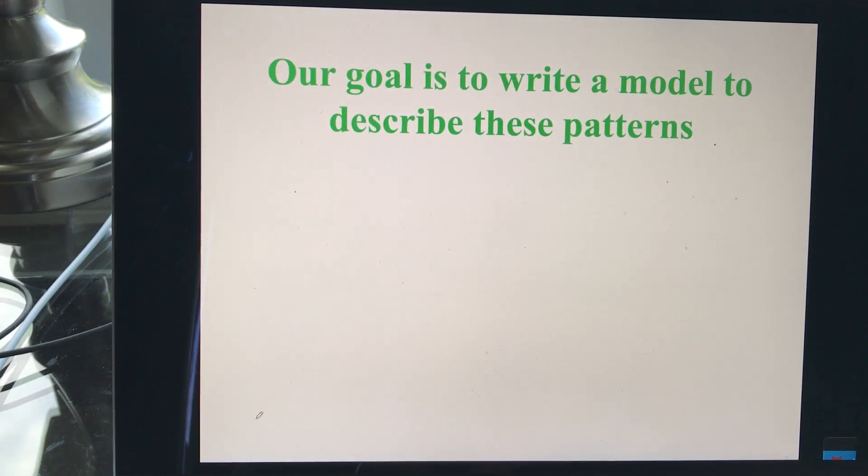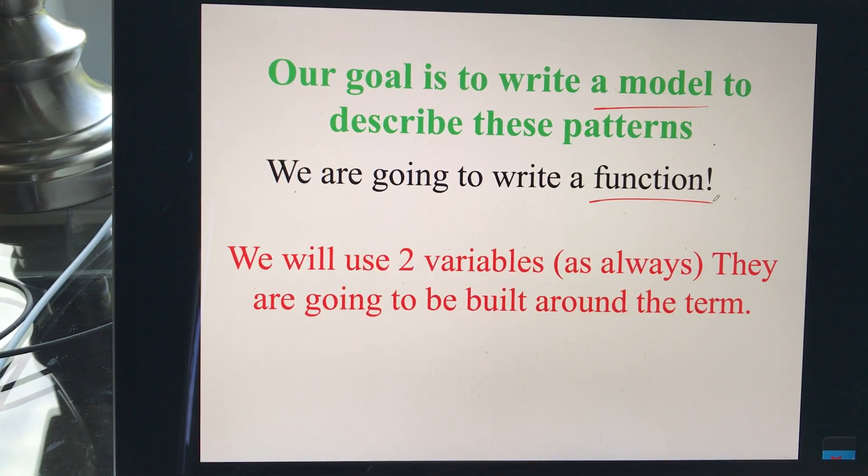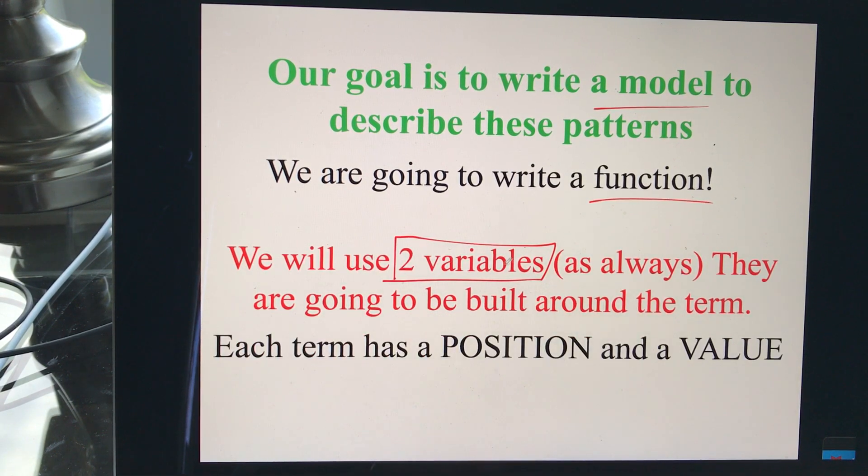Now our goal really isn't just to work through lists and figure out numbers. It's to actually write a model. As always, we're trying to get the algebraic model for this. And of course, our models, we call them functions. And for all of our functions, we're going to use two variables like we always do. And what we're going to use is actually the position and the value. Those are going to be the two variables that we use.